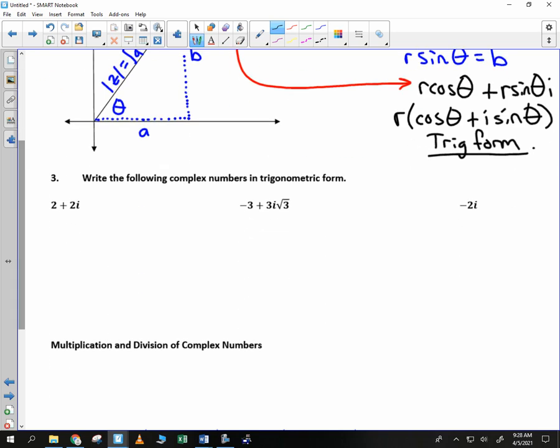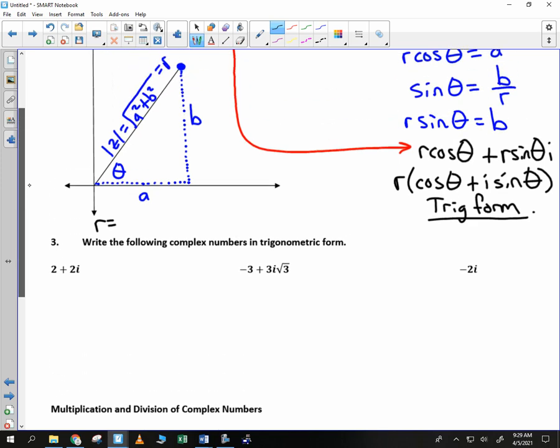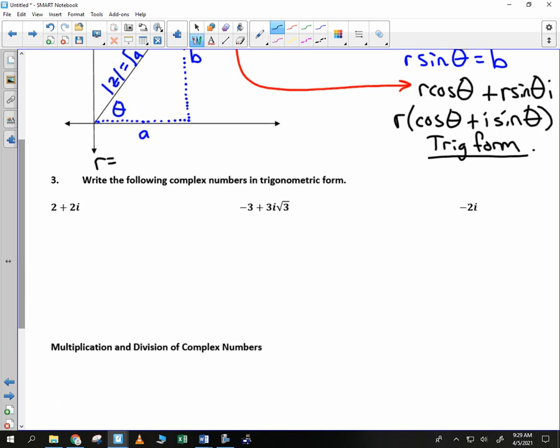Now, when people want to convert to this form, they need to know what r is. And we've already determined that r is simply the square root of a squared plus b squared. So if you want to find r to put it in this form, you just need to solve r is equal to the square root of a squared plus b squared.